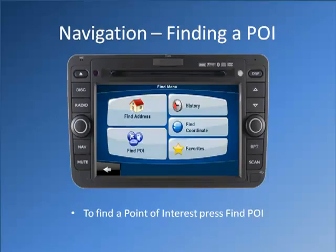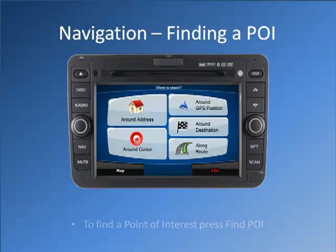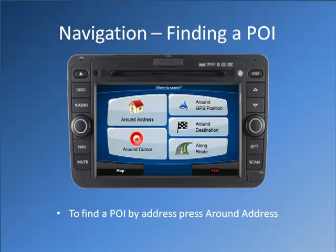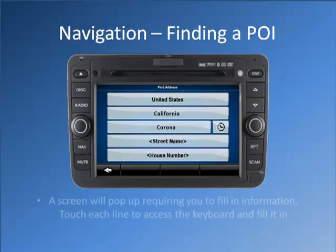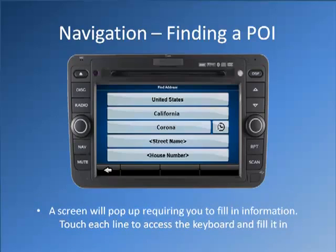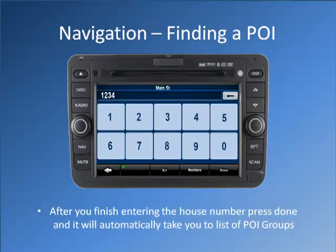To find a point of interest, press Find POI. To find a point of interest by address, press Around Address. A screen will pop up requiring you to fill in information. Touch each line to access the keyboard and fill it in. After you finish entering the house number, press Done and it will automatically take you to a list of POI groups.